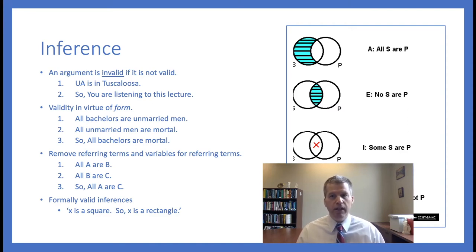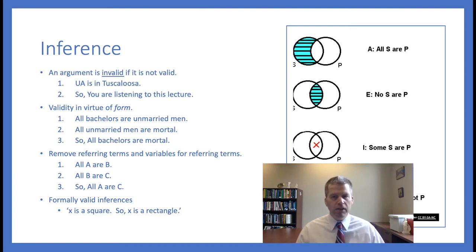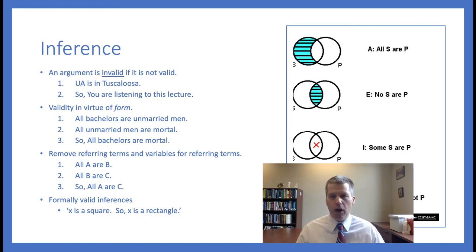Some arguments are valid but not formally valid. Consider: 'x is a square, so x is a rectangle.' There's nothing about the form of the argument that makes the conclusion follow from the premise. If we replace the terms with variables — 'x is A, so x is B' — we can find cases where the premise is true and the conclusion is false. For example, substitute 'rectangle' for A and 'square' for B: some rectangles are not squares. So Aristotle rightly focuses on formally valid arguments — arguments that give us security when extending our knowledge.